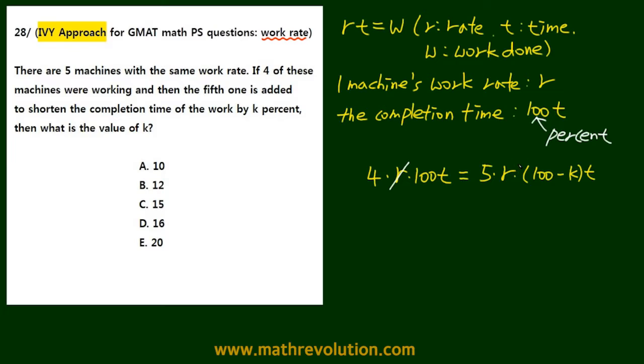So we cross out R and T. So now we're left with 400 equals 5 times 100 minus K, which is 500 minus 5K.